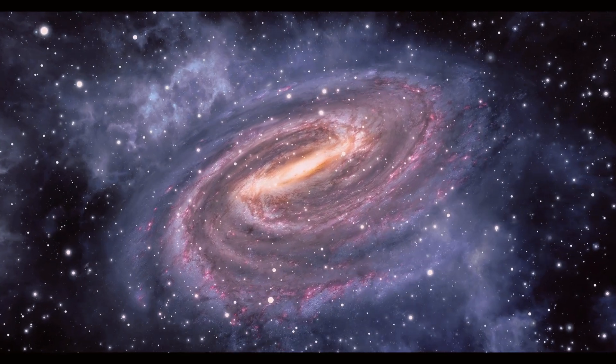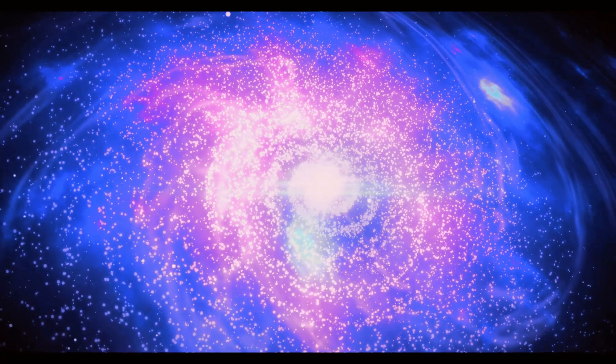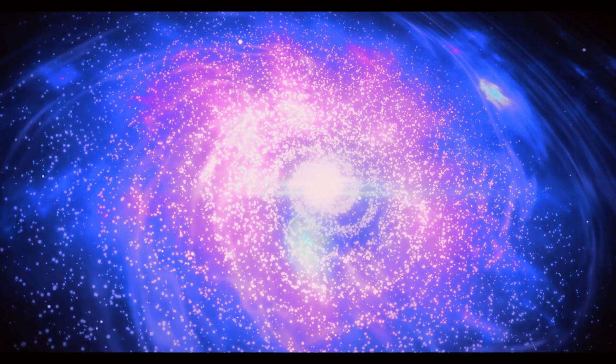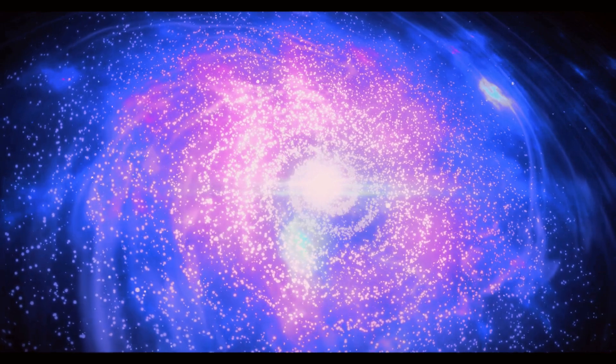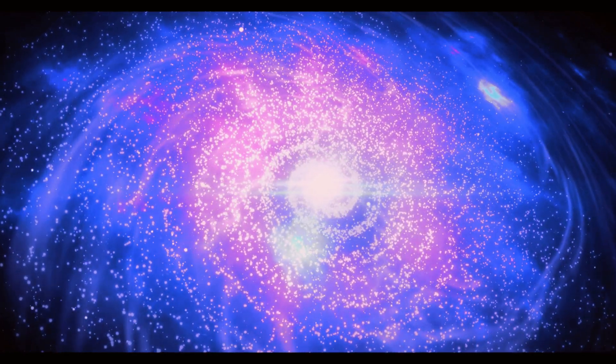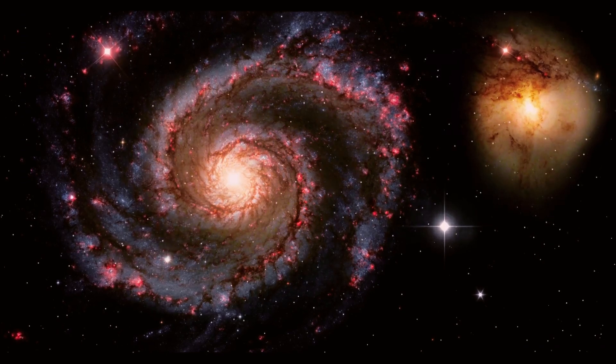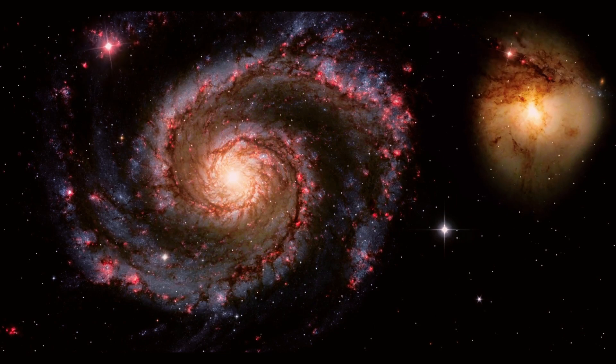One of the most common types of galaxies is the spiral galaxy. These galaxies have a distinct spiral structure, with arms that curve outward from a central bulge. They are often characterized by their bright, young stars and active star formation. Examples of spiral galaxies include our own Milky Way, as well as the famous Andromeda Galaxy.